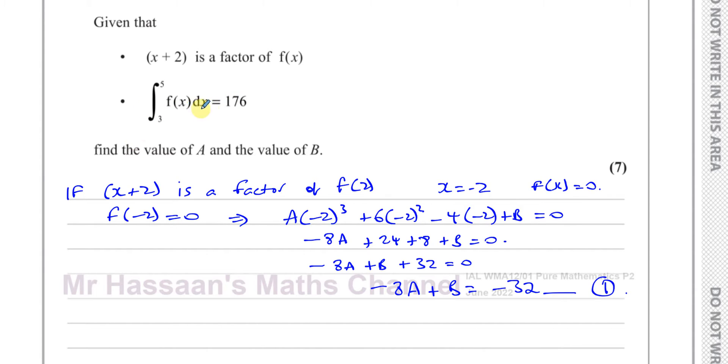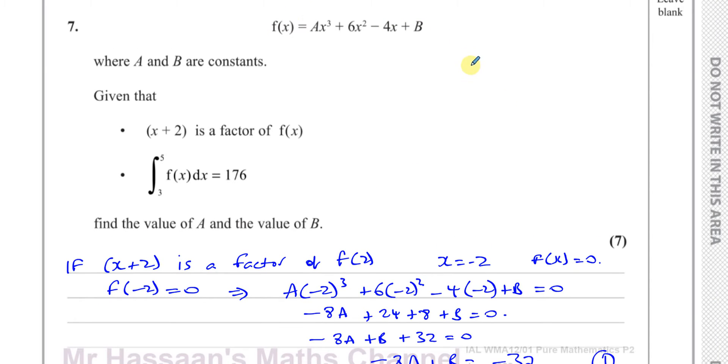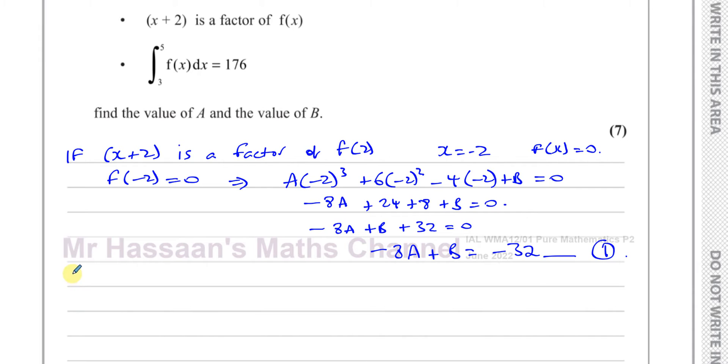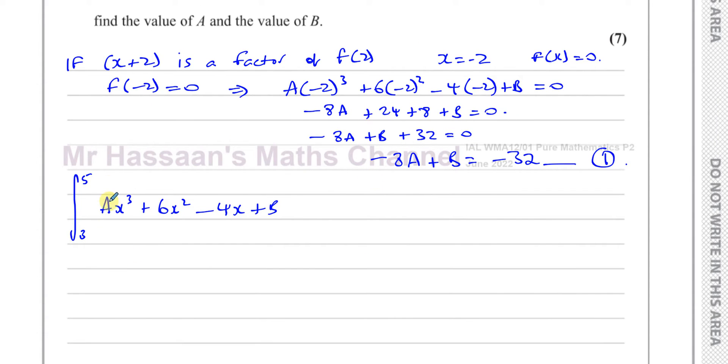Now we have another piece of information that the integral between 3 and 5 of f(x) with respect to x gives us the value 176. So we know this is the original function f(x). So let's set up the integral. Let's set this up now.